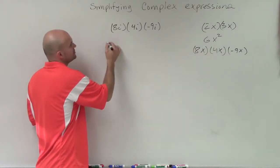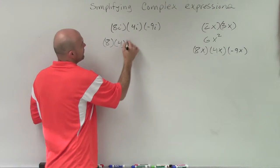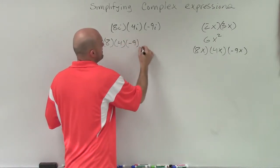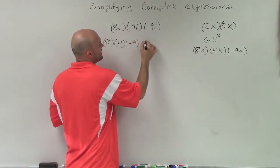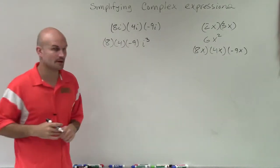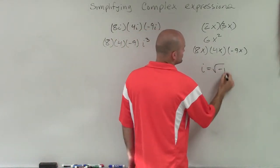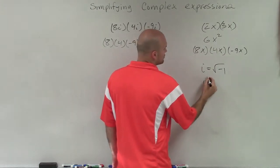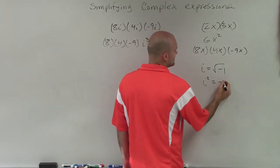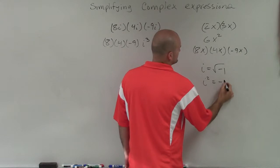So what I'm going to do is I'm just going to rewrite this as 8 times 4 times negative 9, and then i times i times i, which is i cubed. Now, so far we understood that the imaginary unit i equals the square root of negative 1. And then if we squared both sides, we know that i squared is going to equal negative 1.